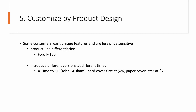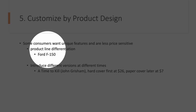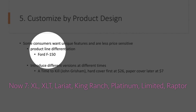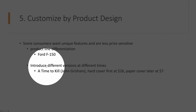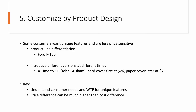The fifth way to segment customers is to customize by product design. Some customers may want unique features and are less price sensitive, so we can conduct price line differentiation. For example, the Ford F-150 has six different models. A second approach is to introduce different versions of the same product — for example, the book A Time to Kill. The key is to understand customer needs and willingness to pay for unique features, and the price difference can be much higher than the cost difference — you don't have to use cost-plus pricing.